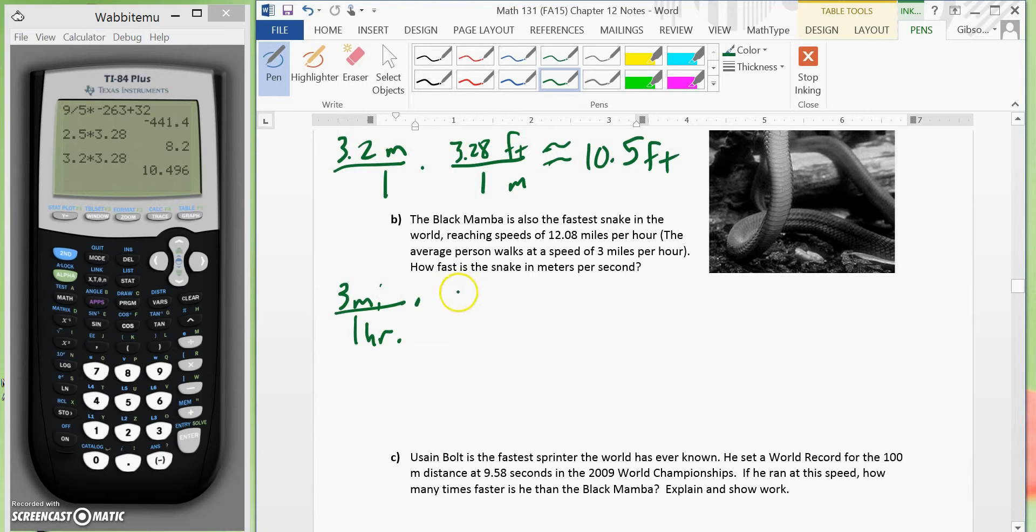Okay, so we would take 3 miles every 1 hour. Now, we want to change miles to meters and hours to seconds. So first, let's deal with the hours. So now we know for 1 hour, it's 60 minutes. And then we know for 1 minute, it's 60 seconds.